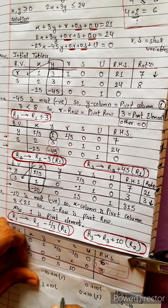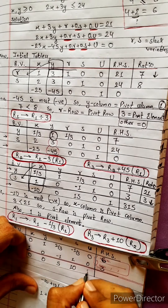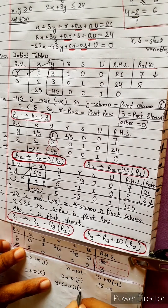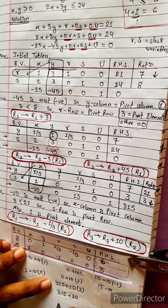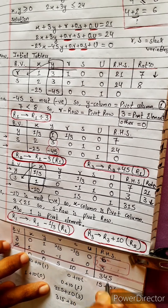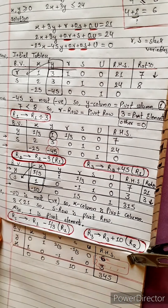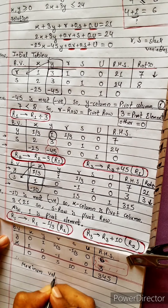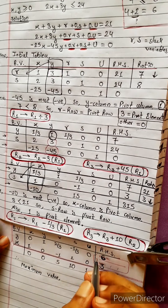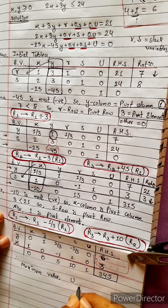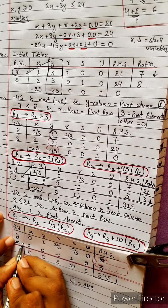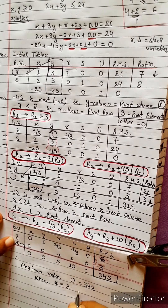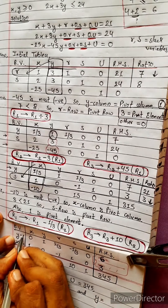The final calculation: 315 plus 10 times R2 gives 315 plus 30 equals 345. Therefore, the maximum value of u equals 345, when x equals 3 and y equals 6. This is our optimal solution.